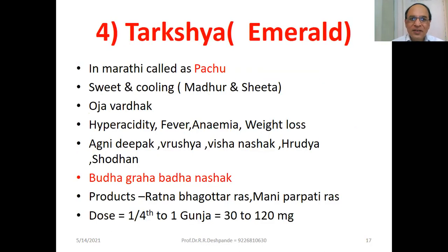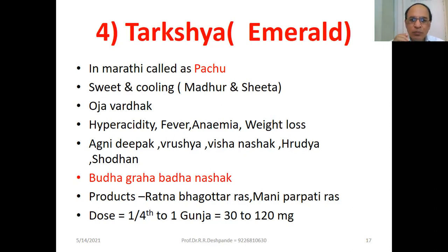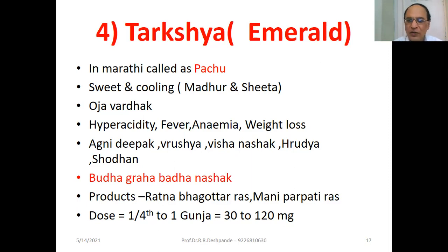Taraksh (Emerald) — called Patsu in Marathi. This is also sweet in taste and cooling in nature — Madhur and Sheetha. It is Oja-Vardhak. Oja is the essence of Sapta-Dhatu: Rasa, Rakta, Mamsa, Meda, Asthi, Majja, Shukra — all seven tissues. The best quality tissue makes Oja, which is equivalent to immunity. Taraksh Emerald is used in hyperacidity, fever, anemia, and weight loss. Also Agnidipak, Vrishya (sex tonic), Vishya-Nashak (antitoxic), Hritya (cardiac tonic), and Shodhana — cleansing the Shrotas. Astrologically, Buddha-Graha-Badha-Nashaka. Products: Ratna-Bhagotra-Rasa and Mani-Parpati-Rasa. Dose: one-fourth to one Gunja, 30 to 120 milligram.